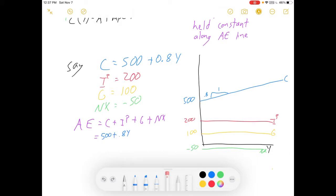So, let's add C in there: 500 plus 0.8Y. Let's add planned investment in there: 200. Let's add government spending in there: 100. Let's add net exports in there: minus 50. Add those all up together and you get 750 plus 0.8Y. And there is your aggregate expenditure function. Intercept 750, slope of 0.8.